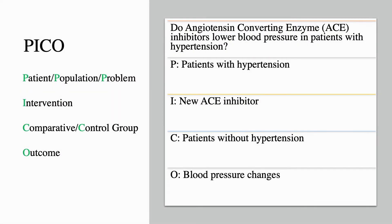PICO: Patient population or Problem, Intervention, Comparative or Control group, Outcome. Research question: do angiotensin converting enzyme inhibitors lower blood pressure in patients with hypertension? P: patients with hypertension; I: new ACE inhibitor; C: patients without hypertension; O: blood pressure changes.